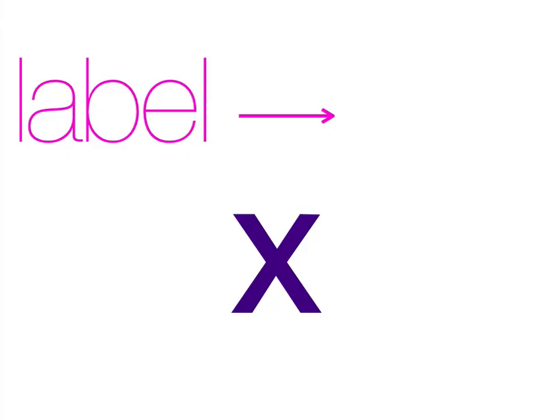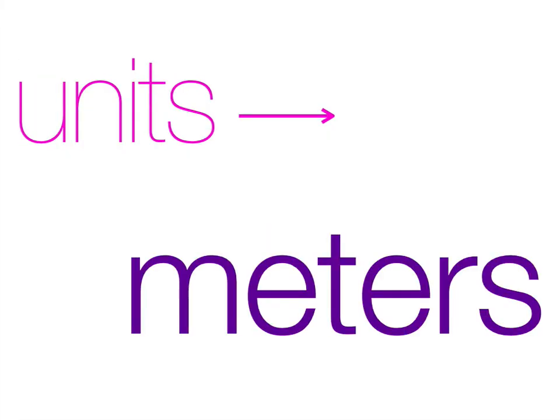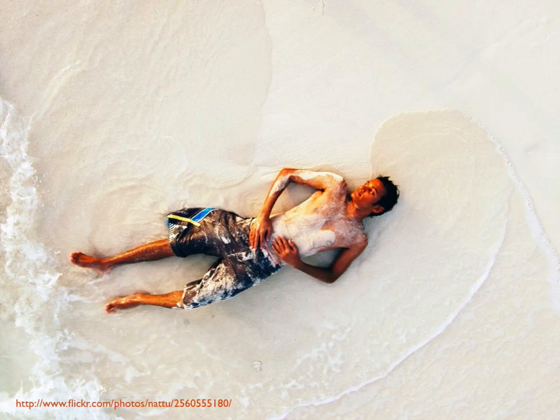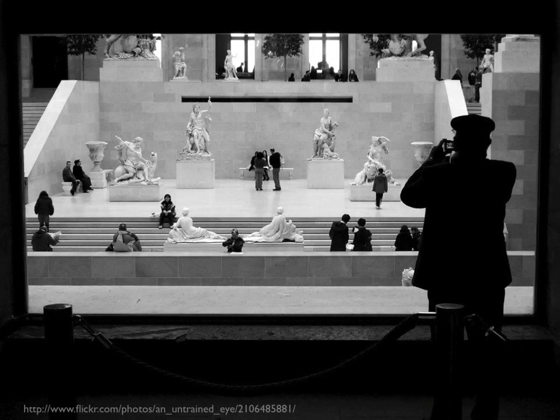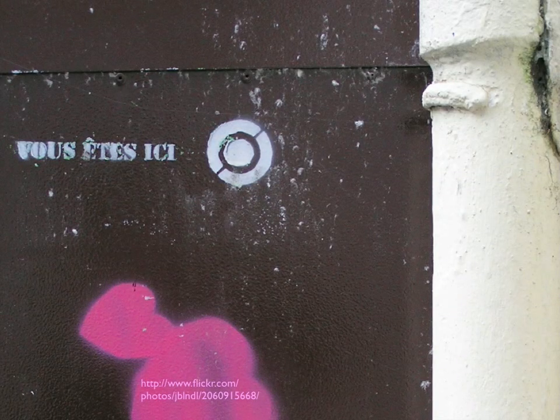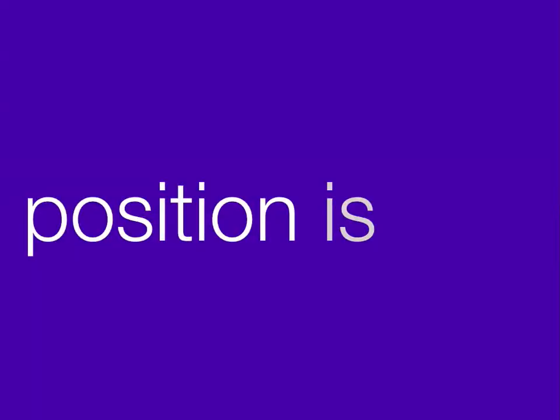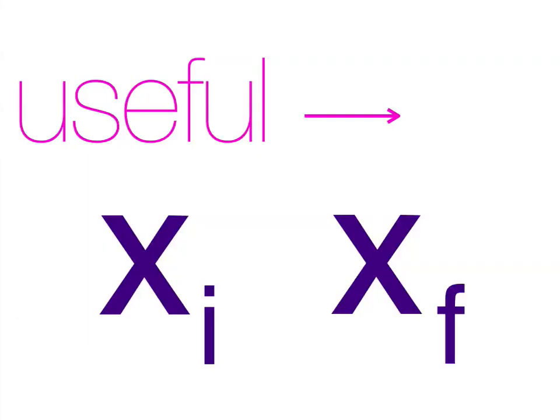Position. Position in the physics equation is labeled x and has units meters. All position is is a location. It's where something is in the world — it's x marks the spot. Position is a location. Normally, when we talk about physics problems, it's really useful to talk about an initial position and a final position.